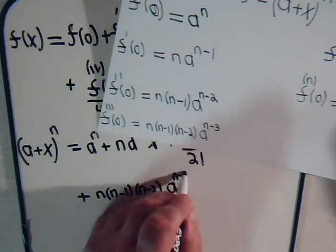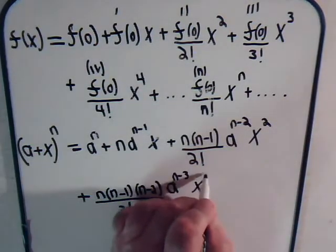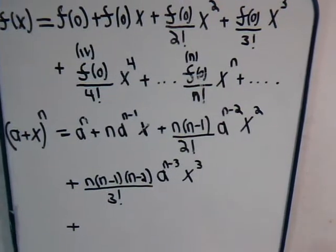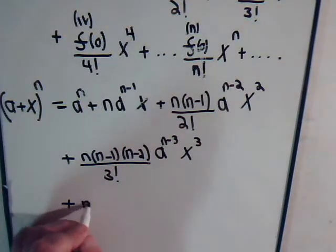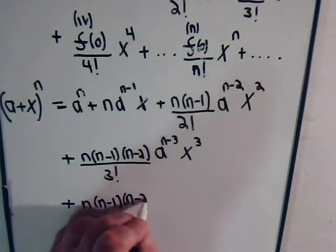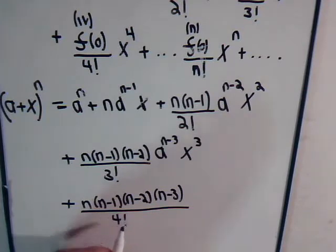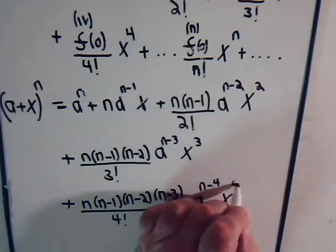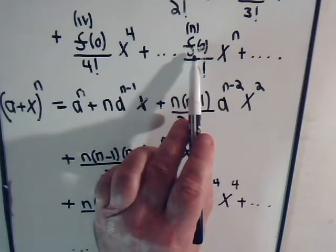That term is n times n minus 1 times n minus 2 times a to the n minus 3 divided by 3 factorial times x cubed, plus the next term which is n times n minus 1 times n minus 2 times n minus 3 divided by 4 factorial times a to the n minus 4 times x to the fourth, and it keeps going like this until we reach the final term where all we get is n factorial.